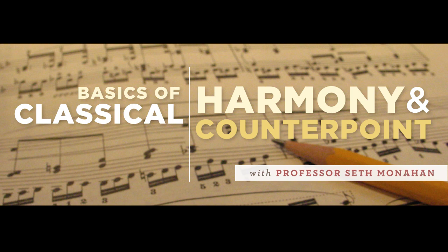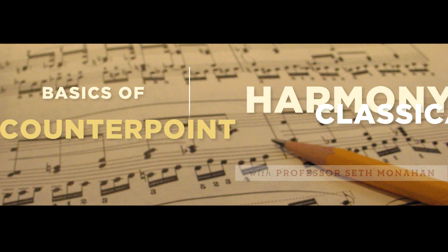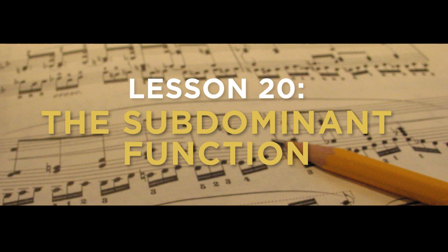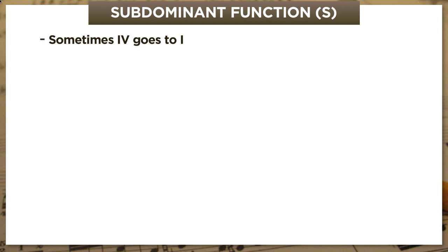Hey everybody. Seth Monaghan here from the land of music theory, and I'm delighted to bring you video number 20 in my series on classical harmony and counterpoint. In this one, we're going to add a new harmonic function to the three we already know—it's what I call the subdominant function. Of all the videos I've made so far, I think this one can be summed up in the fewest words: sometimes four goes to one. The rest of the video basically just unpacks that statement. As usual, I'm going to load the front end with the need-to-know stuff, and then spend a lot of time exploring how this plays out in real music.